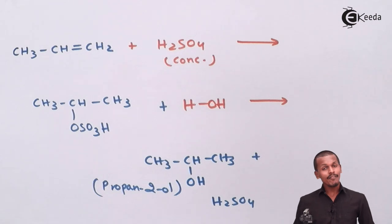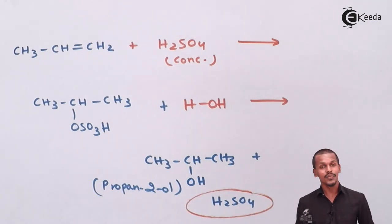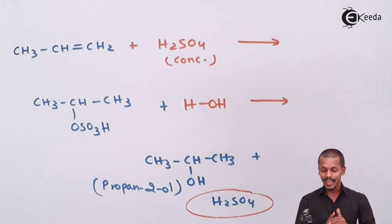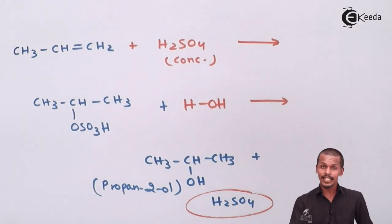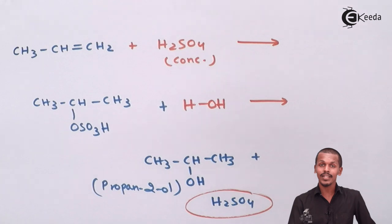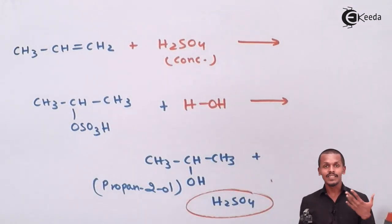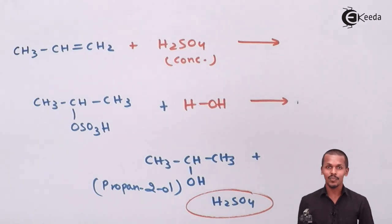So we can convert an alkene to an alcohol by using water and H2SO4. The rule followed is Markovnikov's rule, and this is the reaction. Now let us move on to the fifth chemical property: ozonolysis.